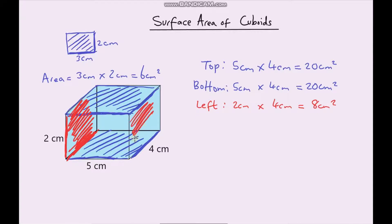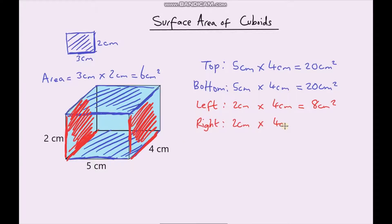And again, if we look at the right, hopefully you can see that the right is going to be exactly the same. So 2cm multiplied by 4cm, and that again gives us 8cm².